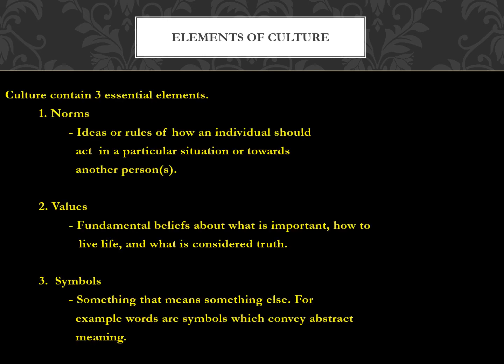Culture contains three essential elements. You have norms — the ideas or rules of how an individual should act in a particular situation or towards another person. You have values — the fundamental beliefs about what is important in a culture, how to live life, and what is considered truth. And then you have symbols — something that means something else. Words, for example, are symbols that convey abstract meaning, and symbols are the way in which you transmit cultural information from one person to the next.